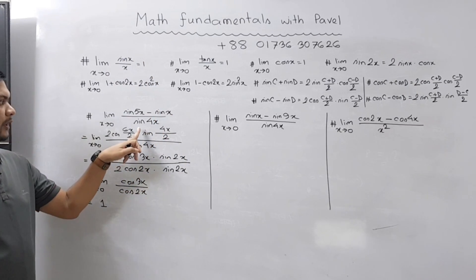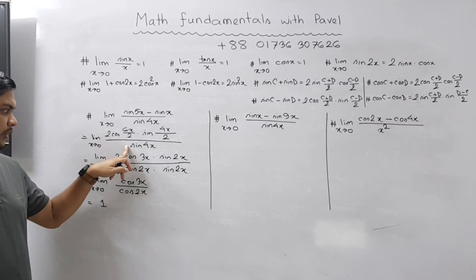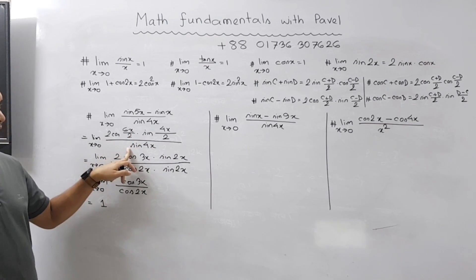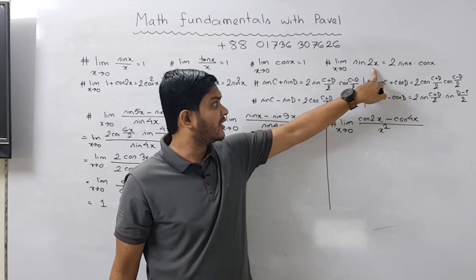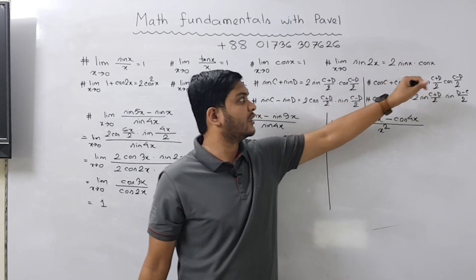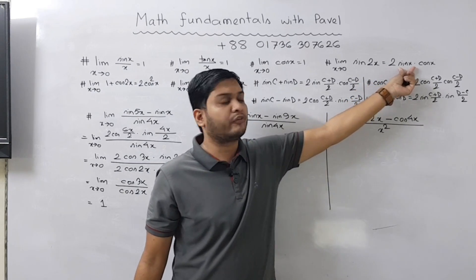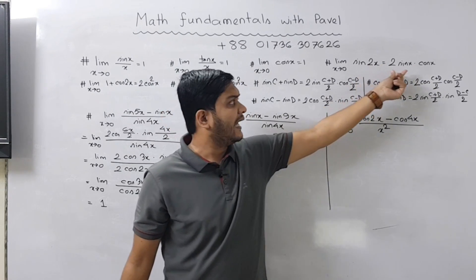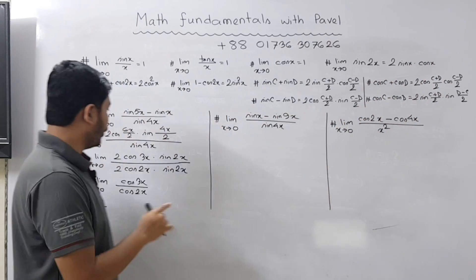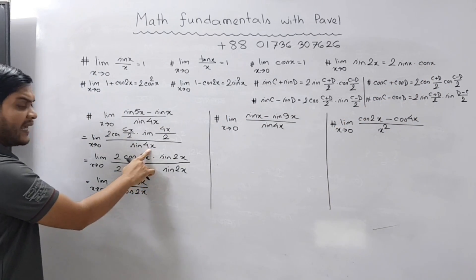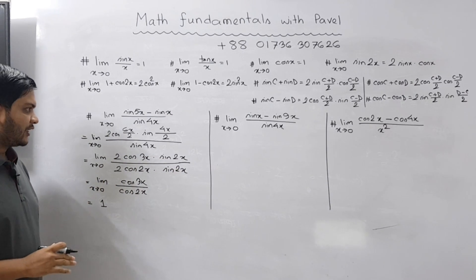Now coming to sin 4x — using the double angle formula, sin 2x equals 2 sin x cos x. Here the theta is halved: since we had 2x, it splits into x and x. Similarly sin 4x splits into 2 times cos(2x) times sin(2x). Very simple. I hope you understood the double angle formula application.